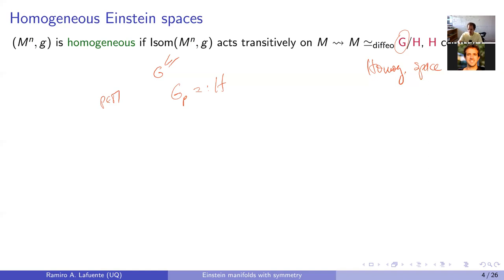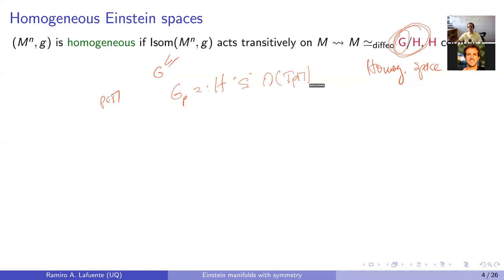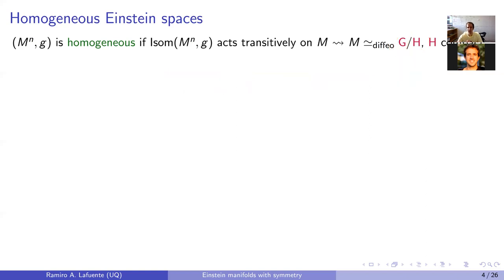H is a compact subgroup because it can be viewed as a closed subgroup of the orthogonal group of the tangent space at p. By basic differential geometry there is a diffeomorphism between the homogeneous space G/H and the manifold M. We will be studying this in detail.